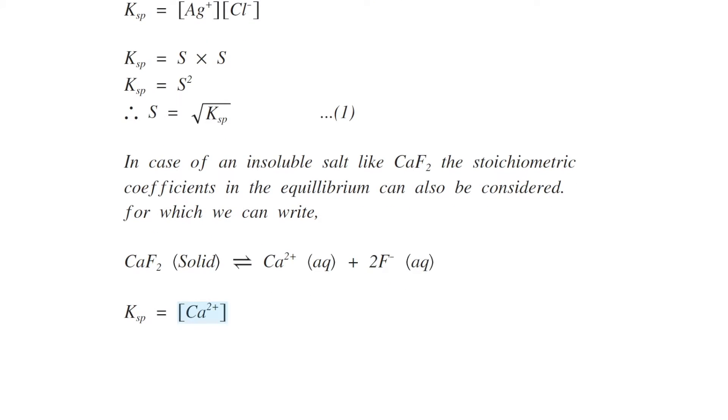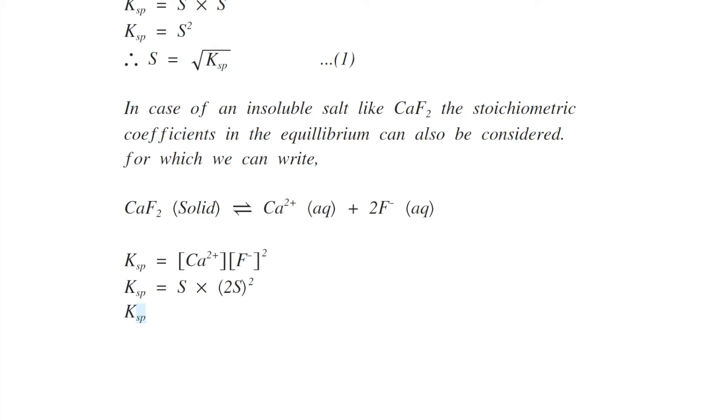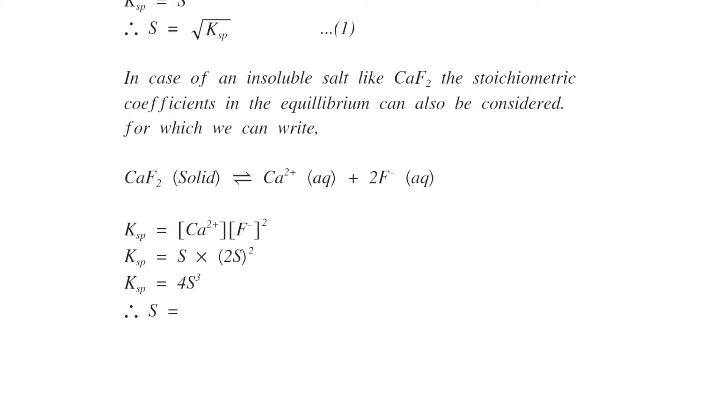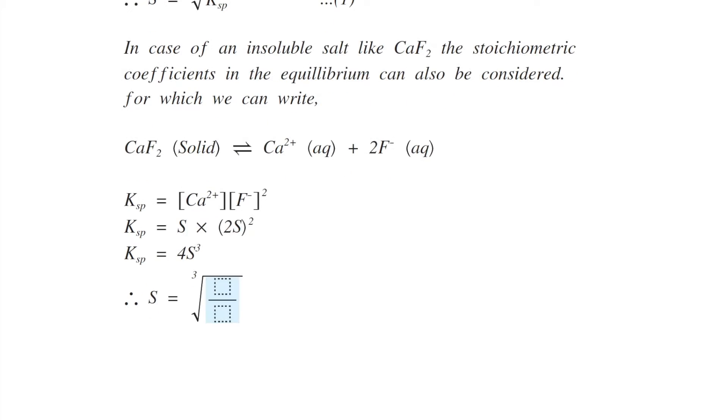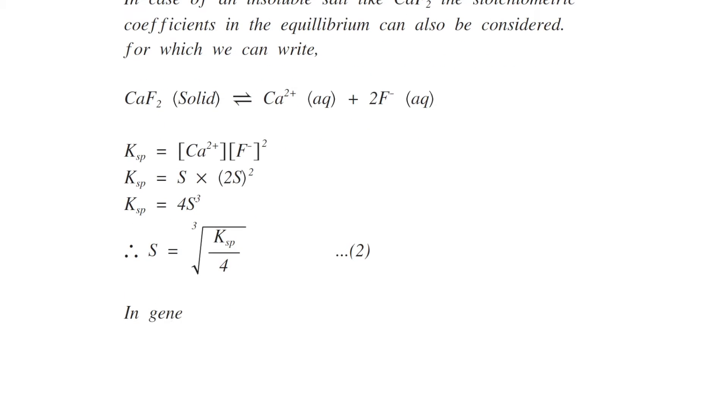So Ksp equals [Ca²⁺][F⁻]², which equals S times (2S)², or 4S³. Therefore, S equals the cube root of Ksp/4. This is equation two.